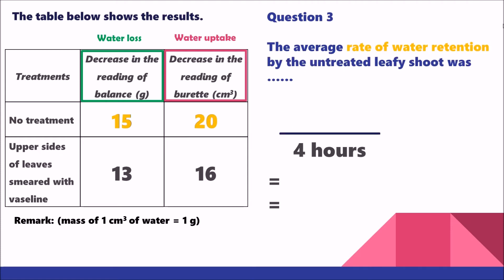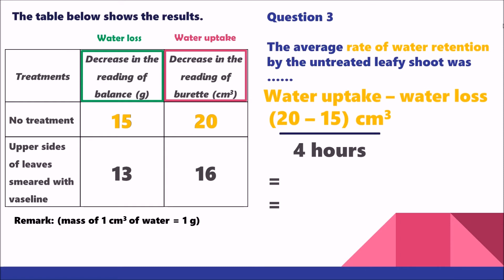Question 3 asks for the average rate of water retention by the untreated leafy shoot. Recall the metaphor: water uptake minus water loss equals water retention. That is 20 minus 15, giving an amount of 5 cm³. Dividing by 4 hours gives a rate of 1.25 cm³ per hour — or equivalently 1.25 grams per hour, since 1 cm³ of water equals 1 gram of water, so the units are interchangeable.